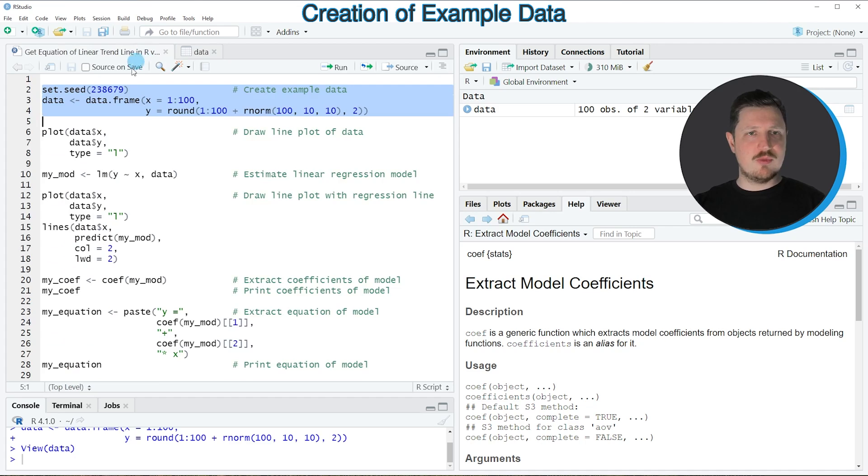Now let's assume that we want to draw these data in a line plot. Then we can apply the plot function as you can see in lines 6 to 8 of the code. Within the plot function we need to specify our X column, our Y column, and our type of plot that we want to draw. In this case we want to draw a line plot, so we're specifying the type to be equal to L.